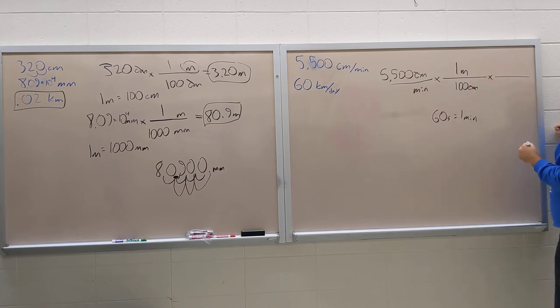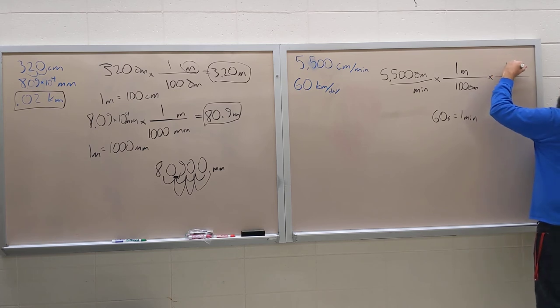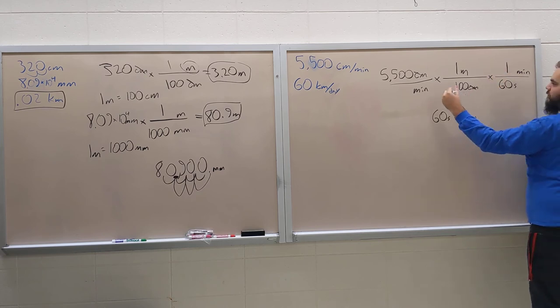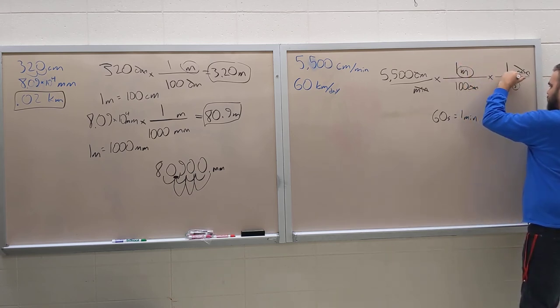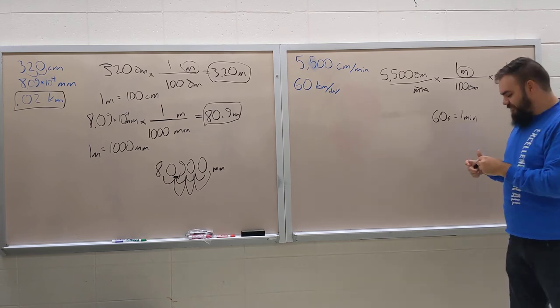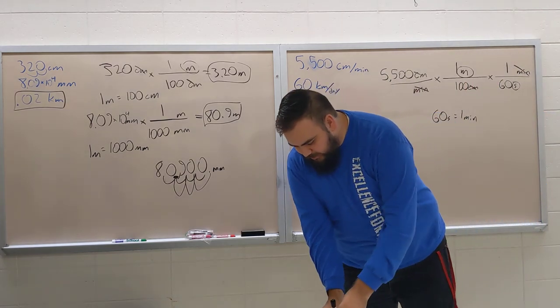We're going to multiply like this. We're going to want the seconds in the bottom this time, because the minutes are on bottom, we want minutes up here so that can cancel out. So we're going to put our one minute up here and then our 60 seconds in the bottom. Minute cancels out, there's one on top, one on bottom. And now the two units that we're left with are meters and seconds. Would you look at that.